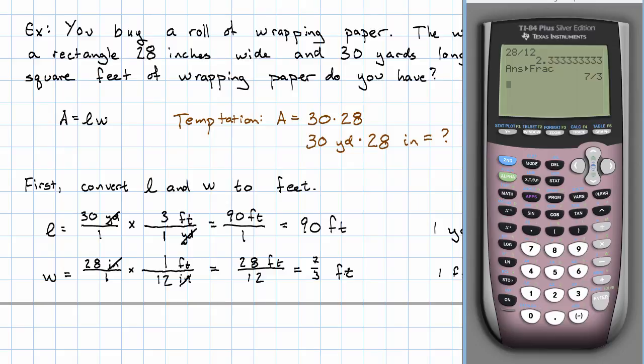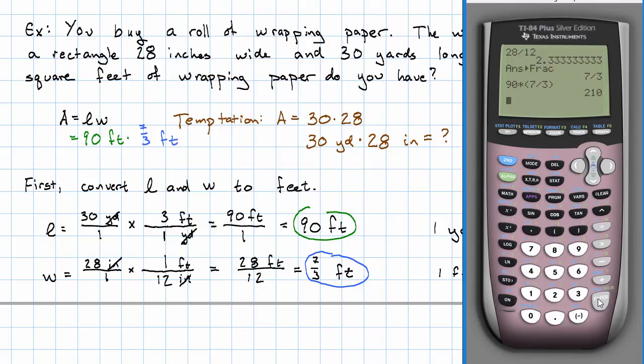Now, if I were going to actually measure that, I might want to make it into a mixed number. But for the purposes of future arithmetic, we'll just leave it as a fraction. So now my area, length times width, I can go back and plug in my 90 feet times my 7 thirds of a foot. And when I multiply 90 times 7 thirds, I get 210 square feet.